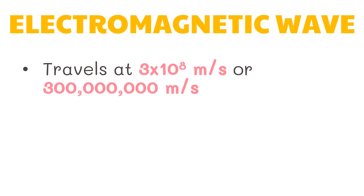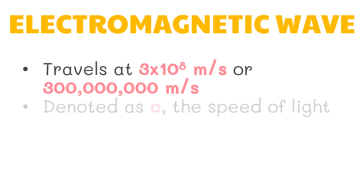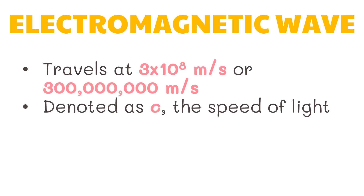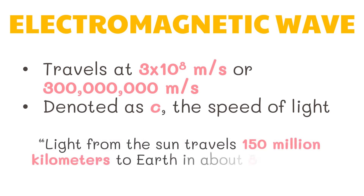Electromagnetic waves travel in a vacuum at a speed of 3 times 10 raised to the 8th power meters per second, or 300 million meters per second. It is denoted as C, the speed of light. The speed is slightly slower in air, glass, and any other material. To appreciate just how great this speed is, consider this: light from the sun travels 150 million kilometers to Earth in about 8 minutes.